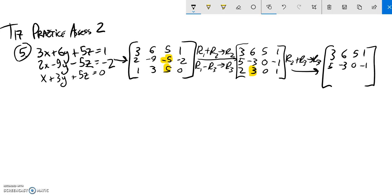Third row, 5 plus 2, that is a 7. Negative 3 plus 2 is 0. 0 plus 0 is 0. And negative 1 plus 1 is also 0. That looks like a 9. My 7 looks kind of like a 9. I'll clean them up a little bit.